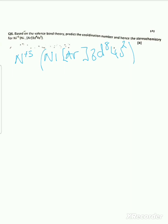Here we have Ni³⁺, so the configuration starts from [Ar]. When they write Ni³⁺, it means it has lost three electrons. Two electrons come from the 4s orbital and one electron from the 3d orbital, so we remain with 3d⁷. The 4s orbital is now empty because it lost two electrons, and from 3d⁸ we subtract one to get 3d⁷.